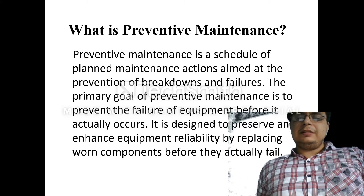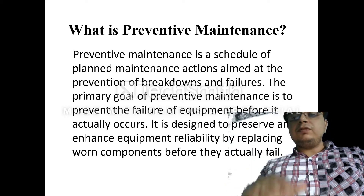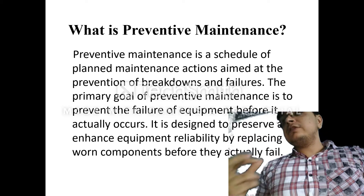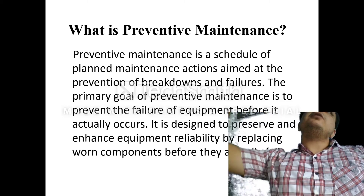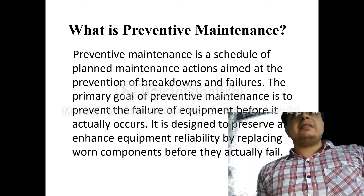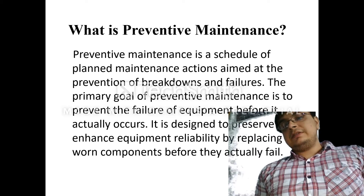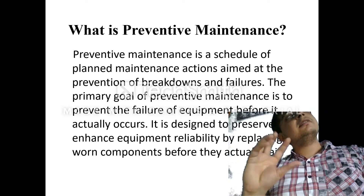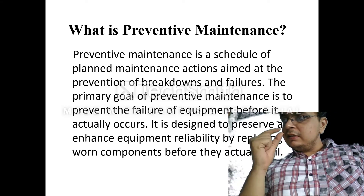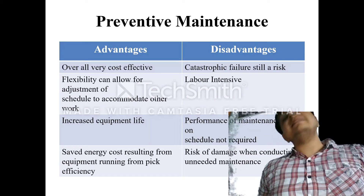Preventive maintenance is mainly used to preserve and enhance the quality of equipment by replacing worn-out components before they actually fail. Before wearing takes place, the worn-out components or parts of the machine should be replaced with new ones, so that new parts will help the machine increase its productivity and prevent sudden breakdown — zero percent damage is allowed in preventive maintenance. Inspection is done regularly, and if something is found to be worn out, it is replaced with a new one, thereby preventing the occurrence of failure.